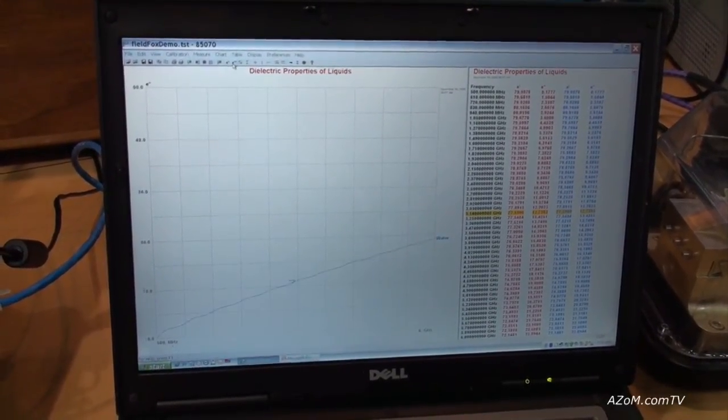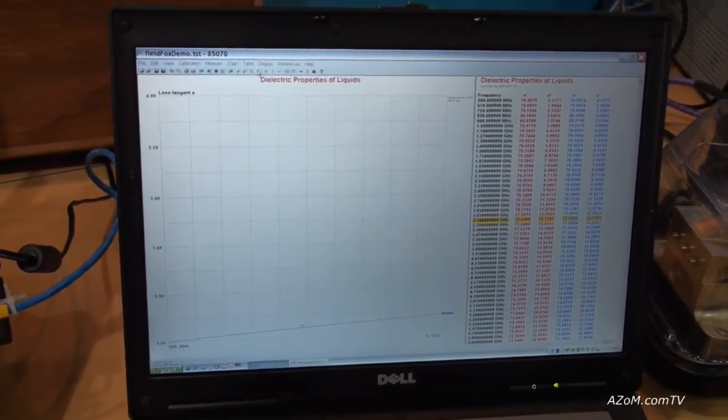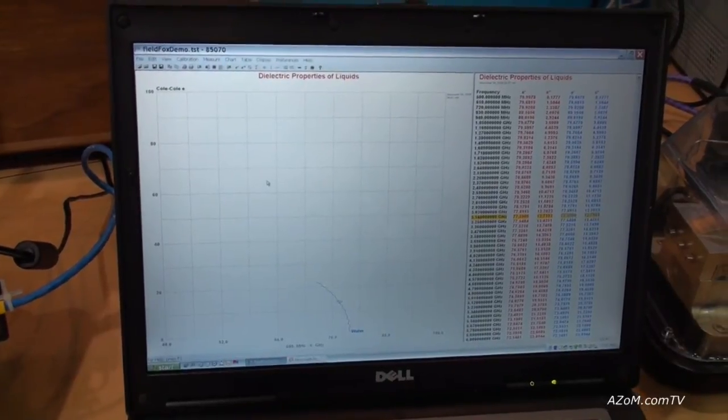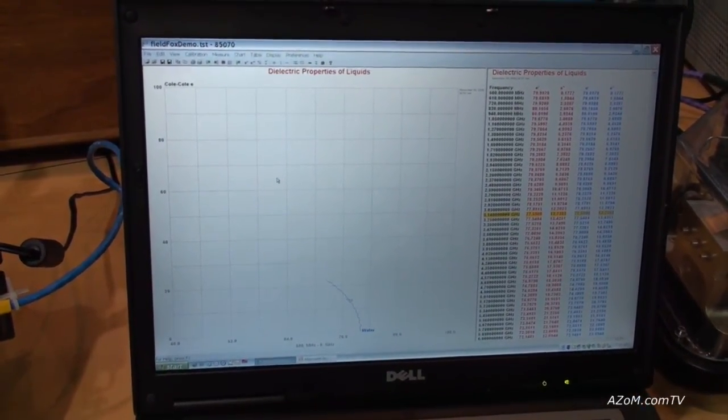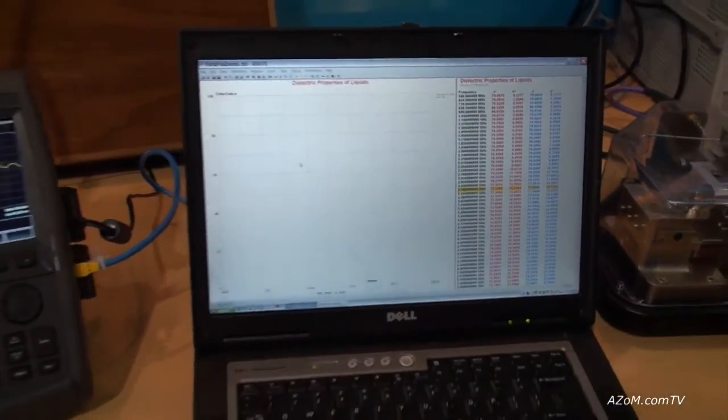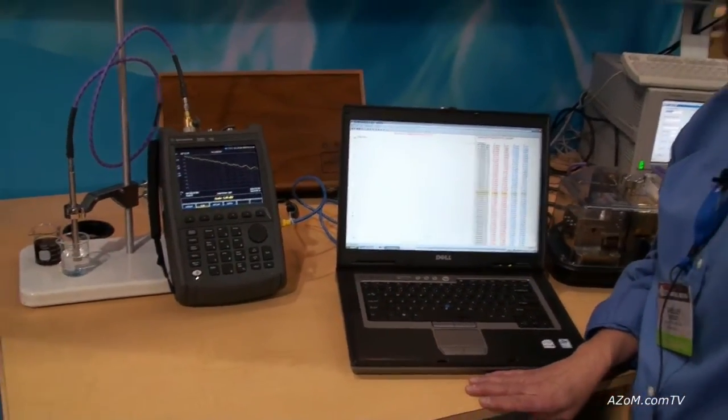And we can look at the imaginary part, loss tangent, and of specific interest to liquids is Cole Cole. This network analyzer goes up to 6 gigahertz. This setup works with all of our network analyzers. The probe will go up to 50 gigahertz with a PNA network analyzer.